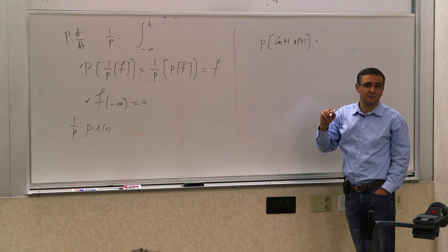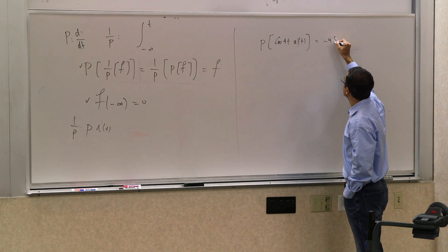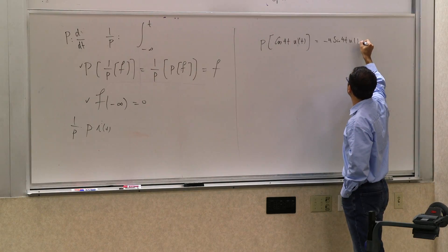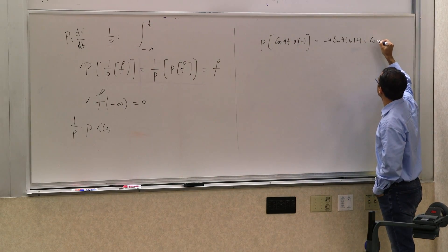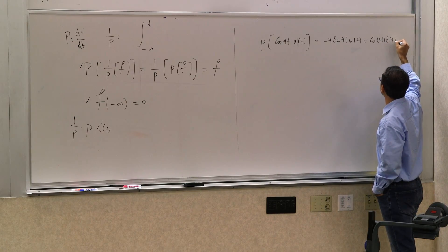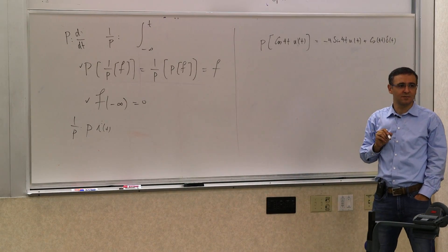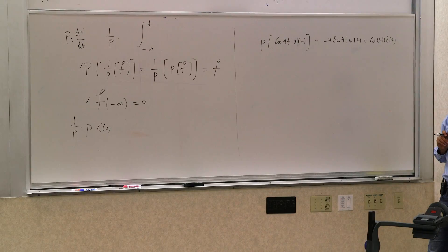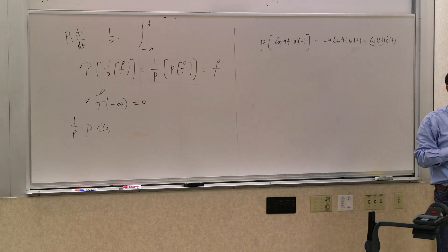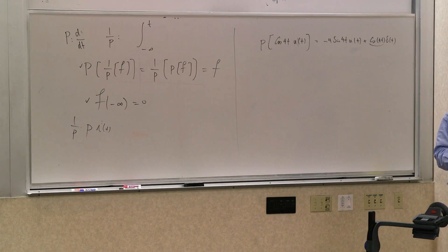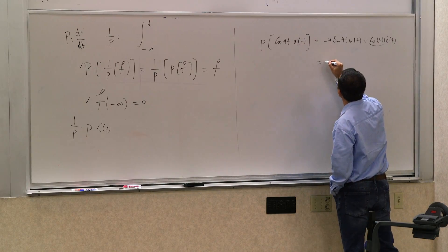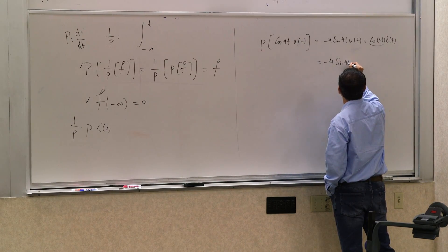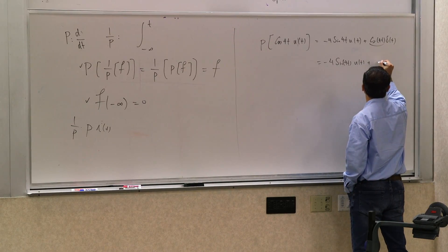So the derivative of the first times the second one plus the derivative of the second one. So what is the derivative of the cosine of 4t? Negative 4 sine of 4t times u(t) plus cosine of 4t delta of t. Can you simplify this a little bit more? Can we simplify the second term? What is the second term?